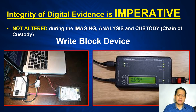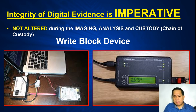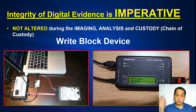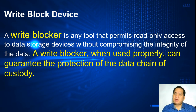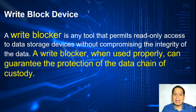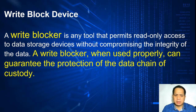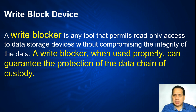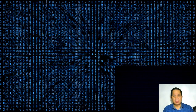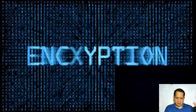To prevent any communication between the computer and a storage device, use a write blocker. Connect the hard drive or flash drive to the write blocker first, then connect the write blocker to the computer. A write blocker is any tool that permits read-only access to a data storage device without compromising the integrity of the data. When used properly, a write blocker guarantees the protection of the data chain of custody by preventing communication — it allows read-only access. Note: when imaging RAM, you don't need a write blocker.